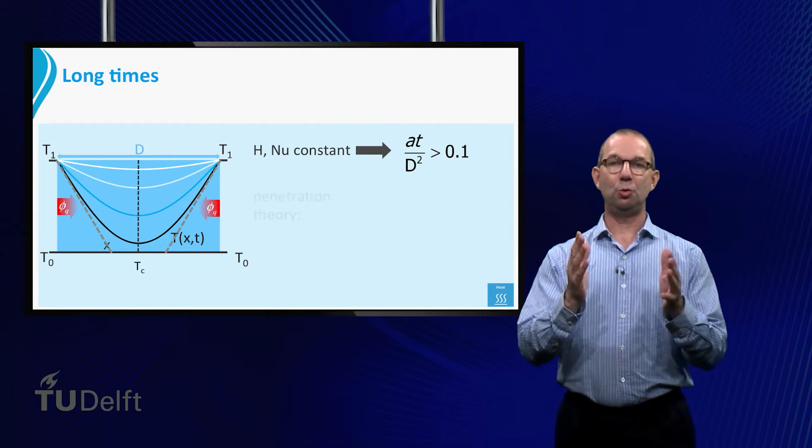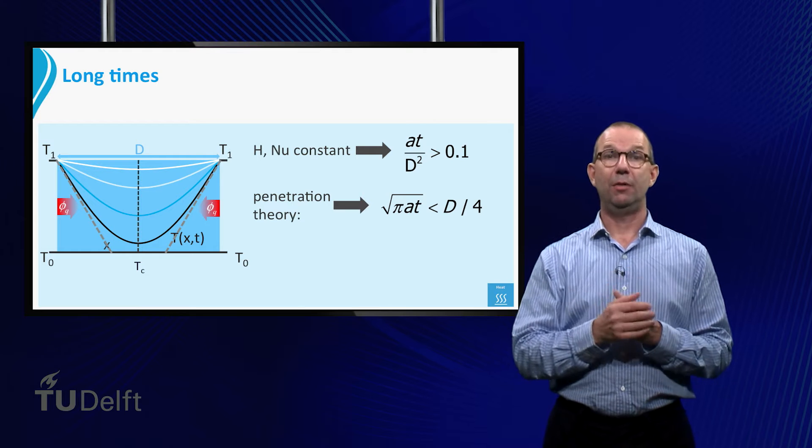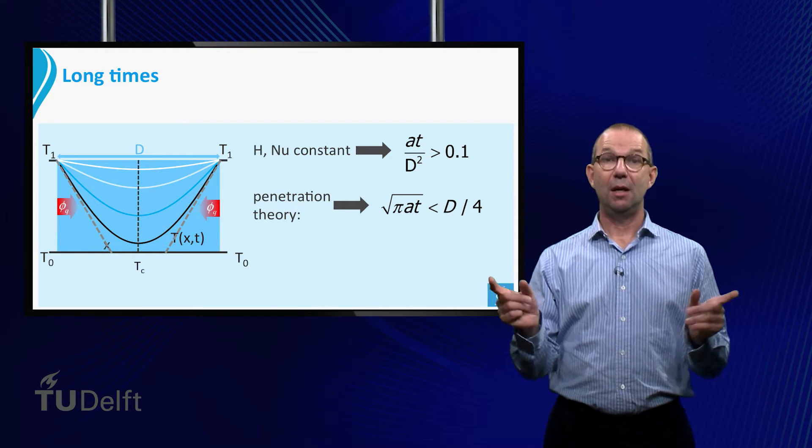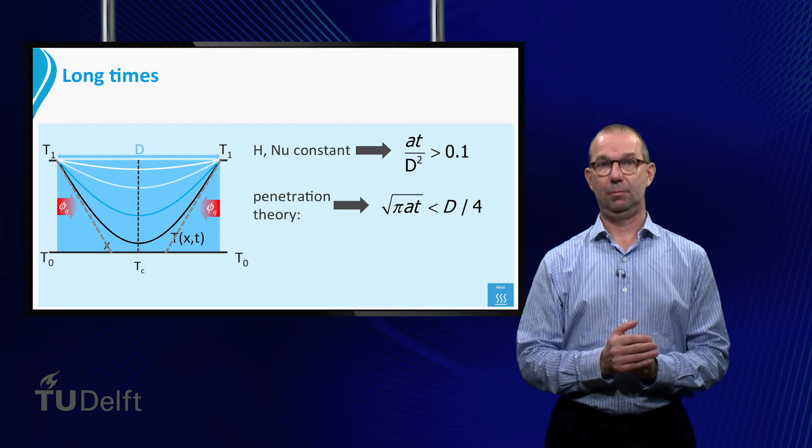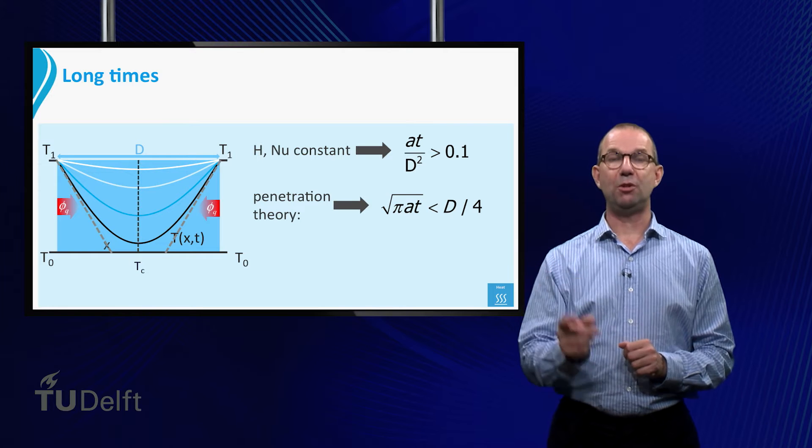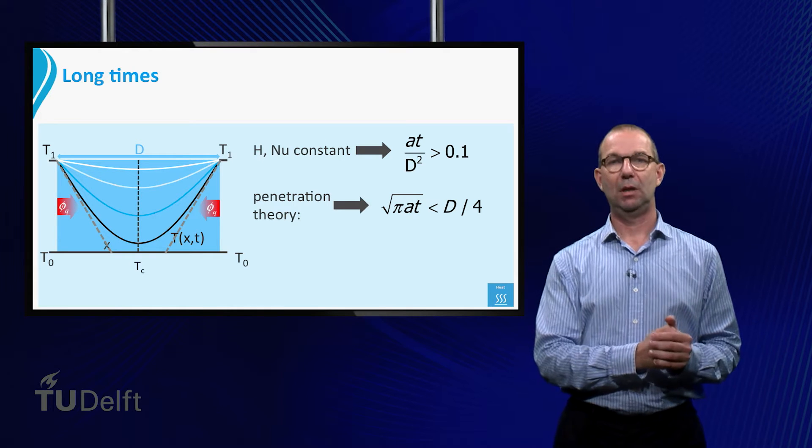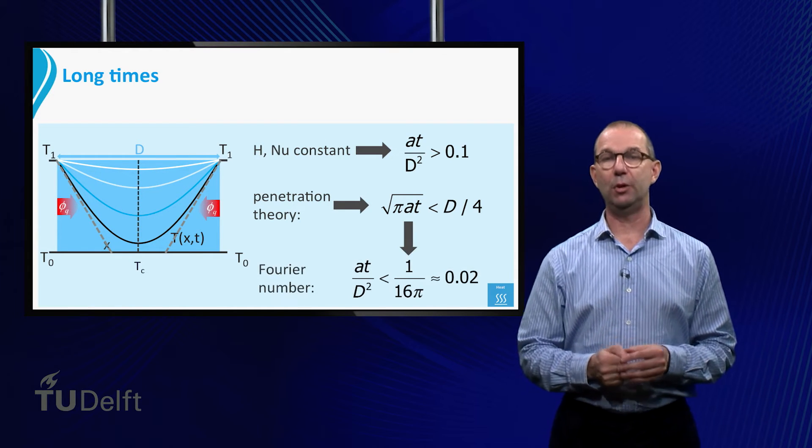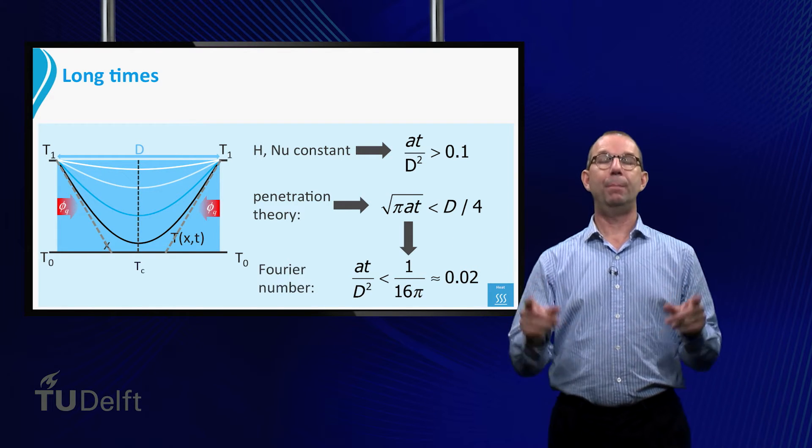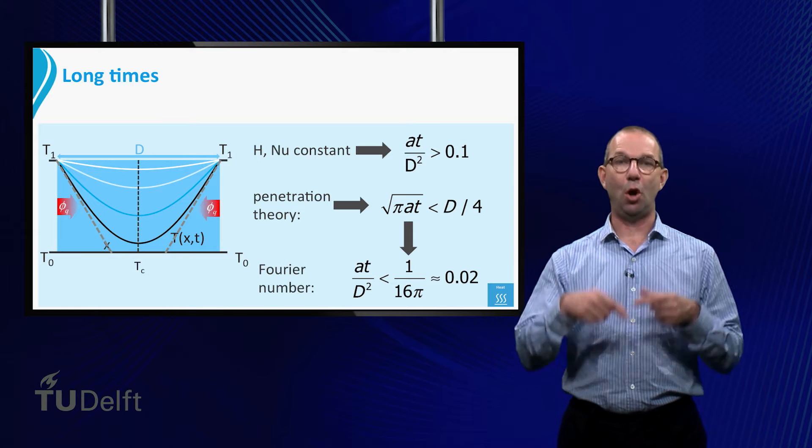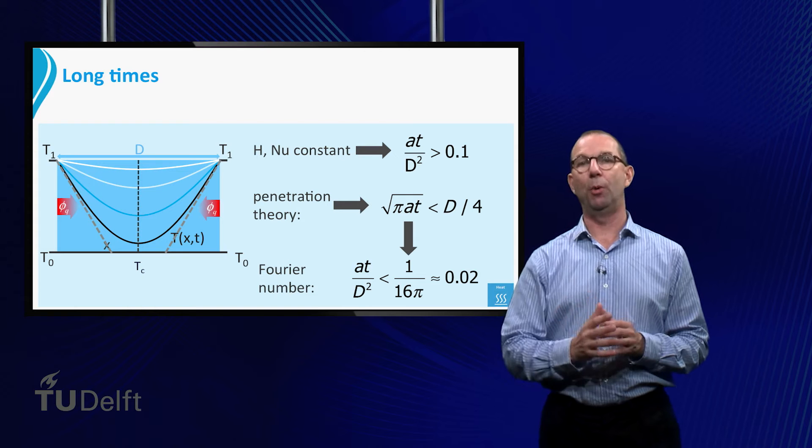Compare this to the short times. Now heat is moving in from both sides, thus the penetration theory is valid if penetration depth hasn't reached halfway the center. Thus it must be smaller than half of half d, that is smaller than d over 4. If we turn this into a rule for the Fourier number, we see that when the plate is heated up from both sides, penetration theory is valid only for At over d squared smaller than 0.02.